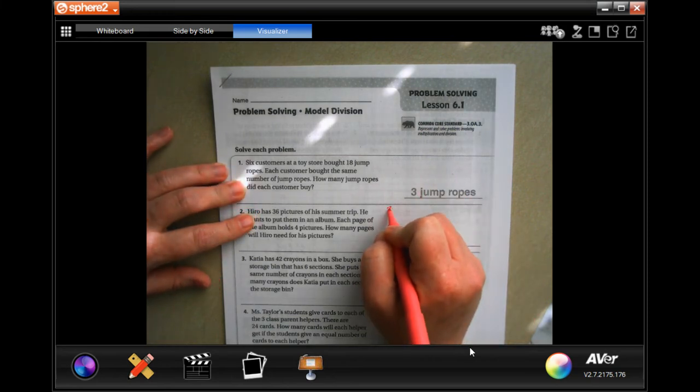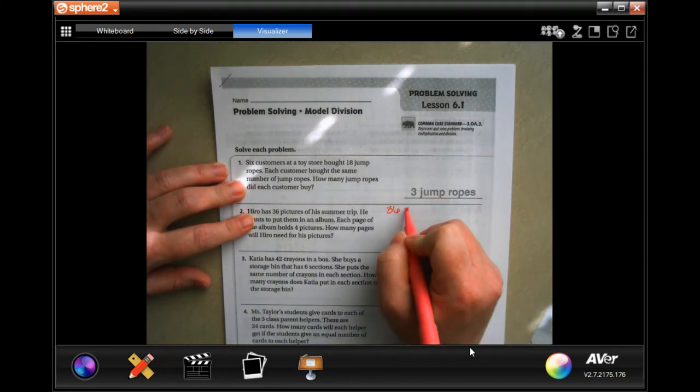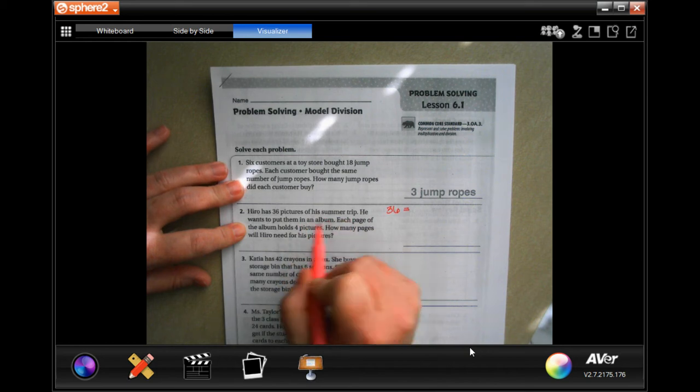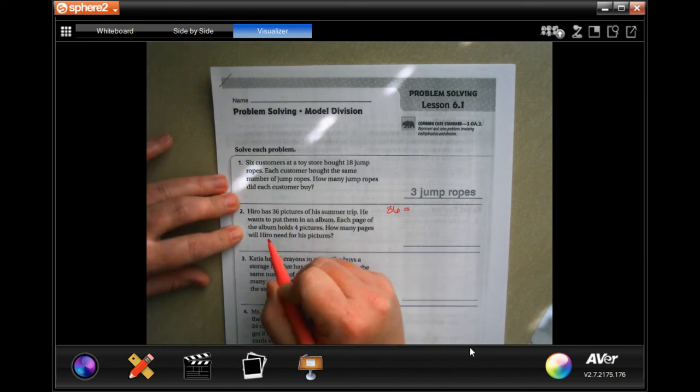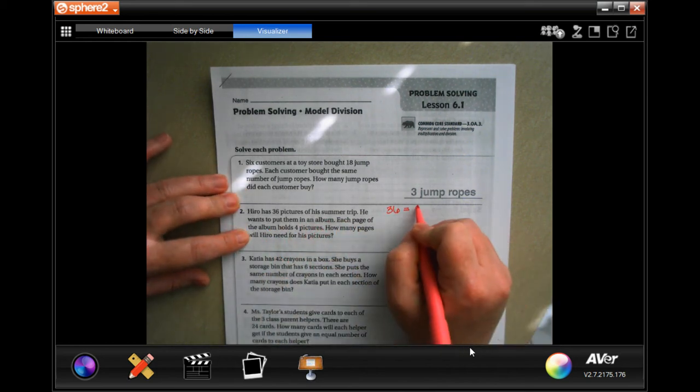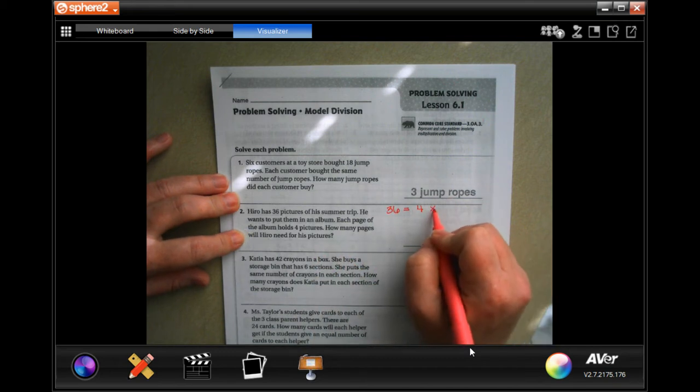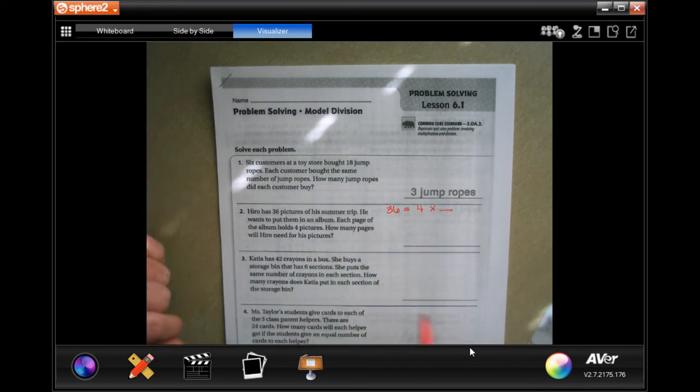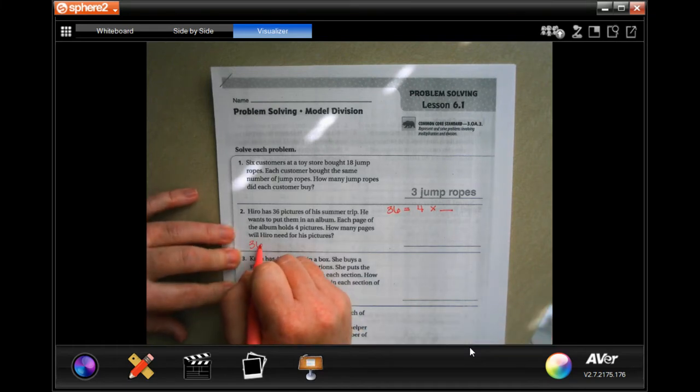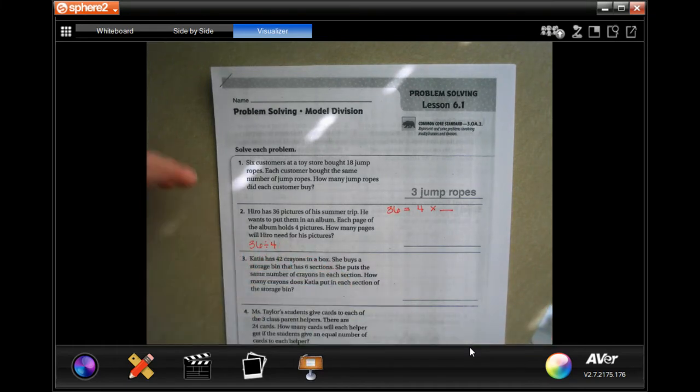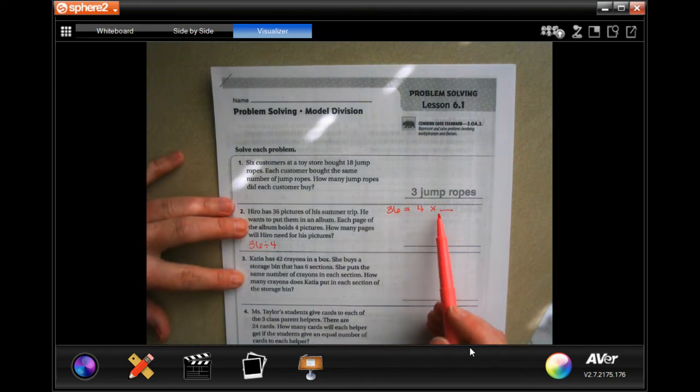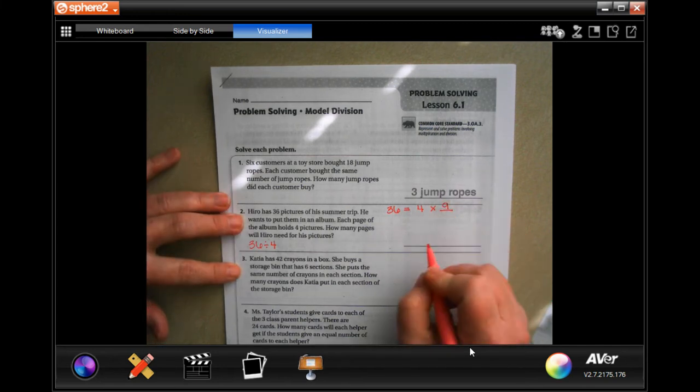36 pictures of his summer trip. He wants to put them in an album. Each page holds four pictures. How many pages does he need? You have two choices: you can do 36 divided by 4, but since you aren't comfortable with division yet, we'll do 36 equals 4 times what. Four times nine, so nine pages.